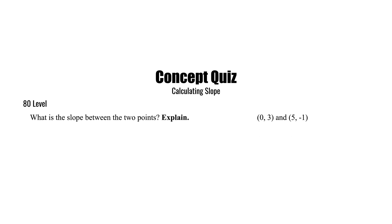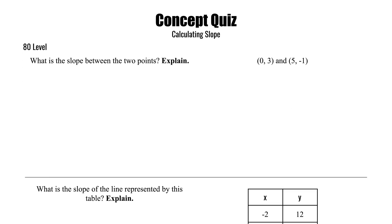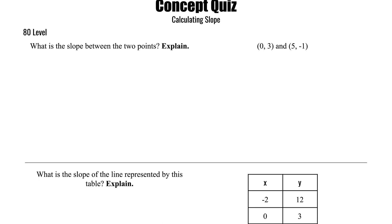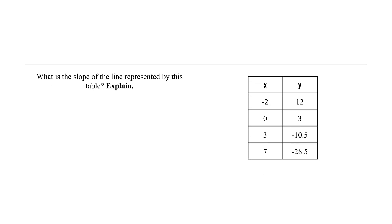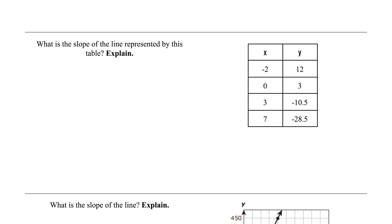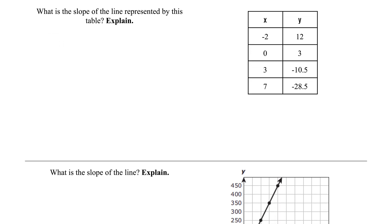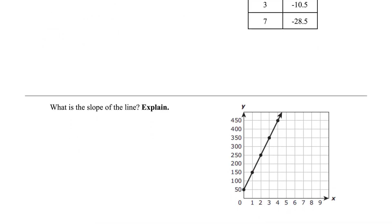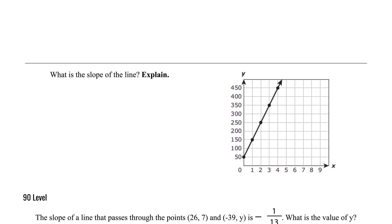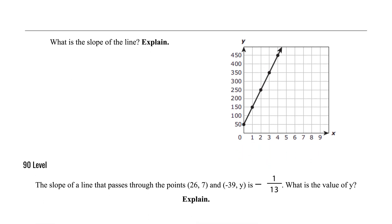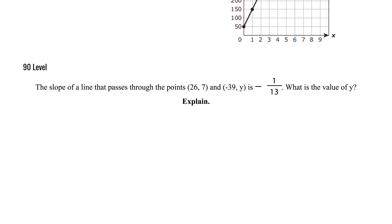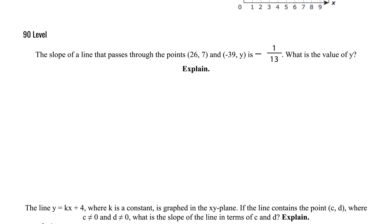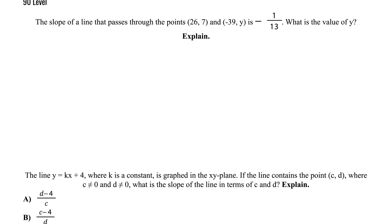Let's get another look at the structure of a typical quiz. There are always six questions, and they are split into three difficulty levels. There are three 80-level questions, which represent proficient understanding, two 90-level questions, which represent advanced understanding, and one 100-level question, which represents mastery understanding.